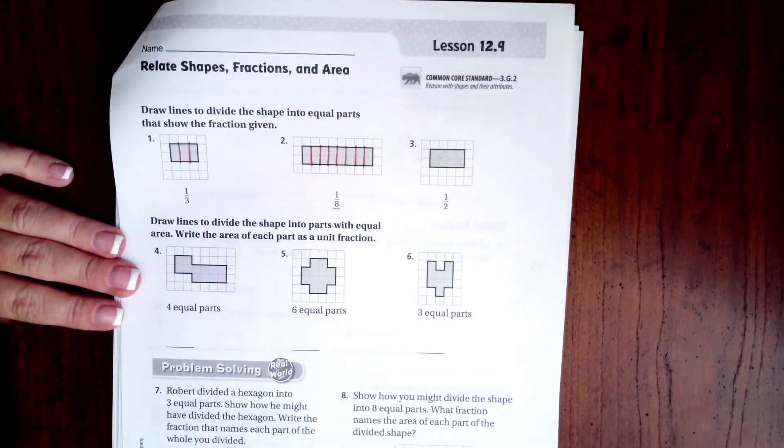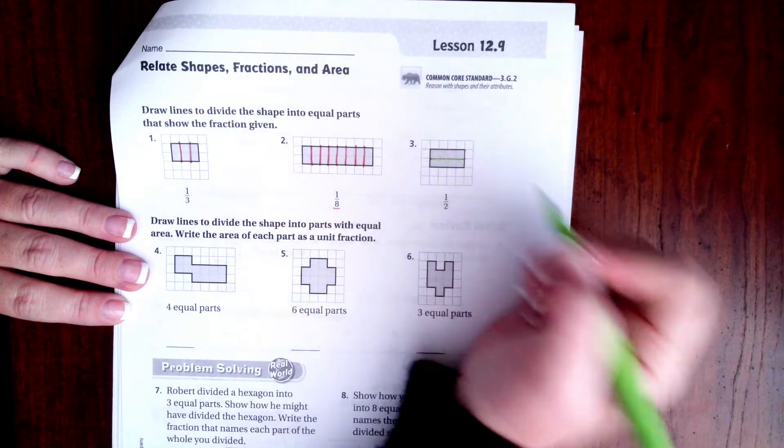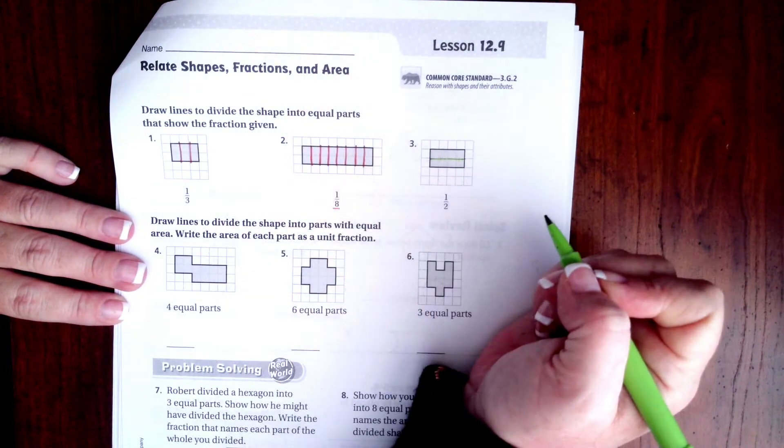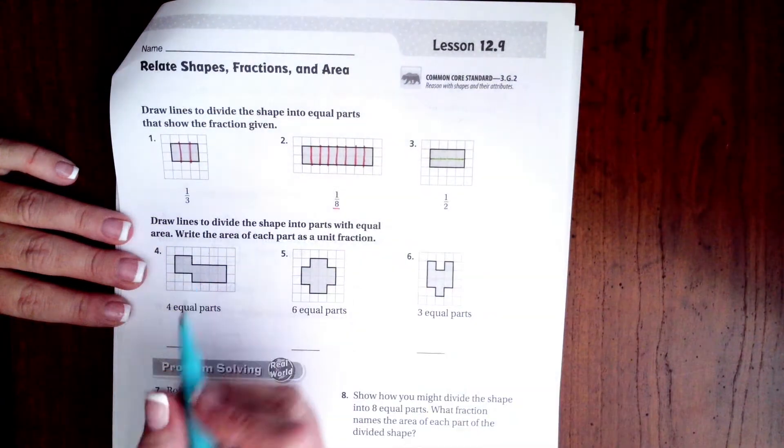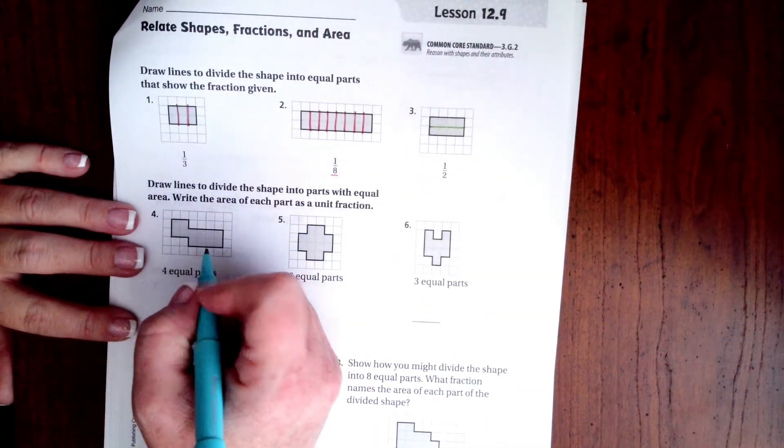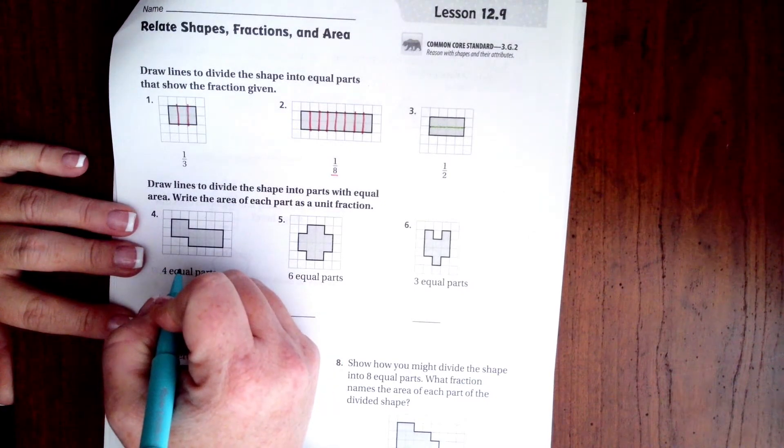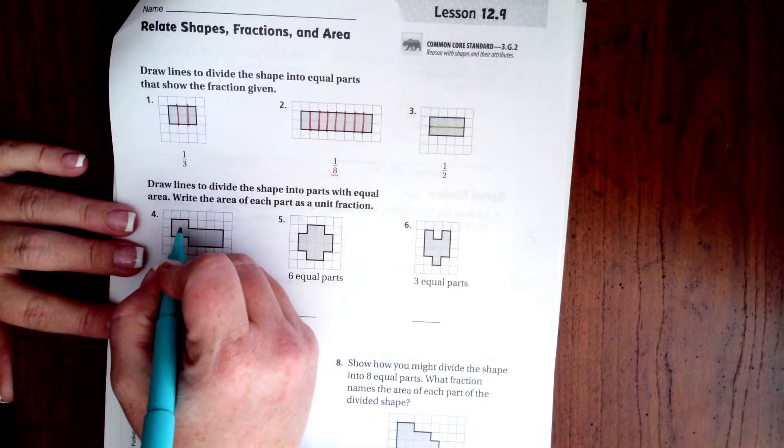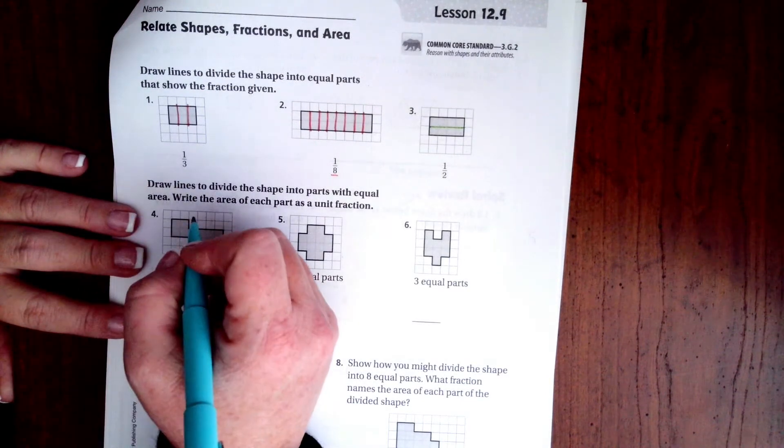Now there are eight columns there. This one is half. It's harder to draw it the other way. I'm just going to draw it straight across. It doesn't always have to be there. Okay, now these guys, four equal parts.